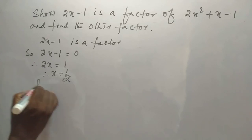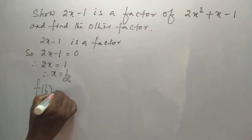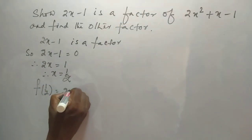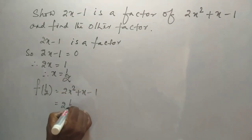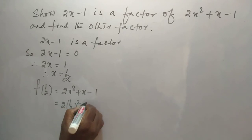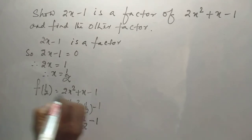Then, f of 1 by 2 is equal to 2x square plus x minus 1. Now, 2 into half square plus half minus 1. This is 2 into 1 by 4 plus half minus 1.